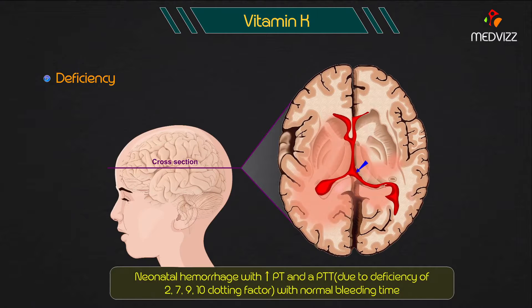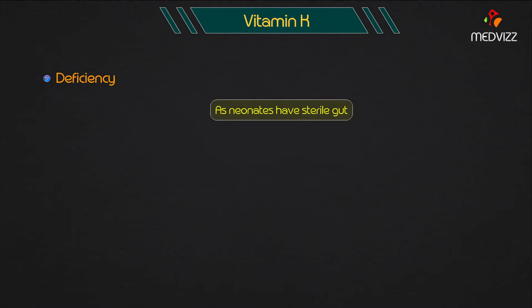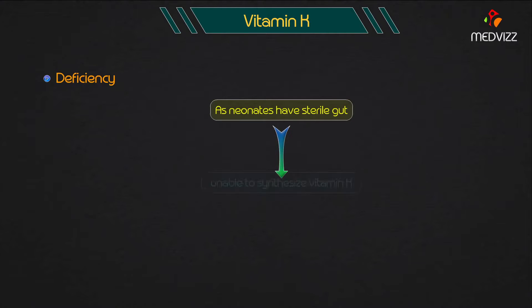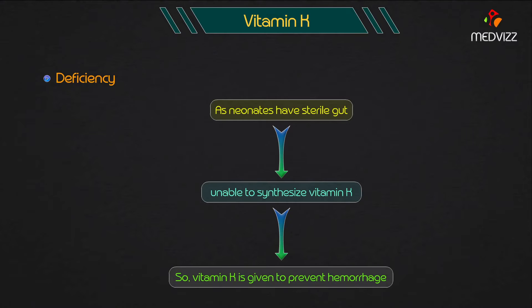Neonatal hemorrhage presents with increased prothrombin time and activated partial thromboplastin time, due to deficiency of clotting factors 2, 7, 9, and 10, within normal bleeding time. As neonates have a sterile gut, they are unable to synthesize vitamin K, so vitamin K is given to prevent hemorrhage.